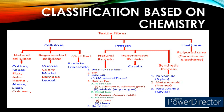Protein-based textile fibers are further classified into natural protein, regenerated protein, and synthetic protein textile fibers. The examples of natural protein textile fibers are wool, silk, eri, muga, tasar, Kashmiri, mohair, Angora, alpaca, llama, and horsehair. The example of regenerated protein textile fiber is casein. The examples for synthetic protein textile fibers are polyamide, meta-aramid, and para-aramid.